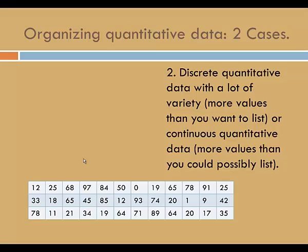The second case involves either discrete quantitative data with a lot of variety, more values than you'd want to list, or continuous quantitative data, which would be more values than you could possibly list. In the table at the bottom of the screen, we see discrete quantitative data. It looks like the values range from 0 up into the 90s. Of course, I could list all the whole numbers from 0 to 99, but I don't want to take the time to do that. So I'm going to put this in case 2.